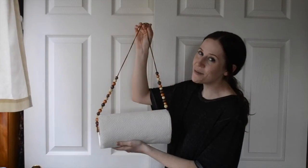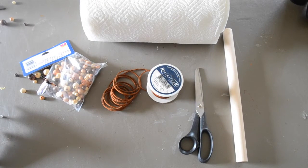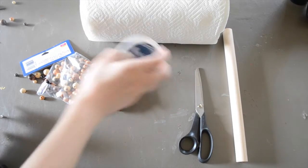So once you've grabbed your supplies, let's go ahead and get started. The first step in making your paper towel holder is connecting your leather cord to your dowel.